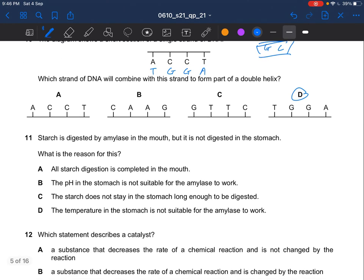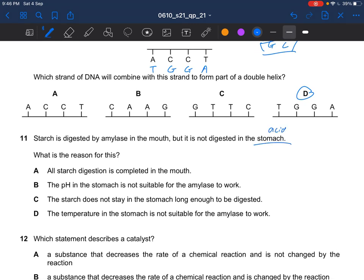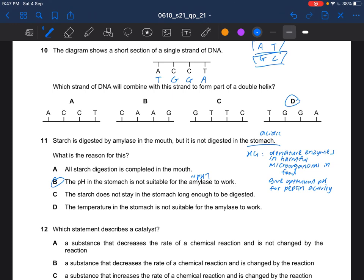Next question. Starch is digested by amylase in the mouth but it is not digested in the stomach. What is the reason for this? You do know that the stomach is extremely acidic because of hydrochloric acid. So what this hydrochloric acid does is that it will denature the enzymes in harmful microorganisms in food. And also, it will also give optimum pH for pepsin activity. The answer would be B. The pH in the stomach is not suitable for the amylase to work. The optimum pH for amylase is around pH 7. So the stomach would actually be too acidic for amylase to work.